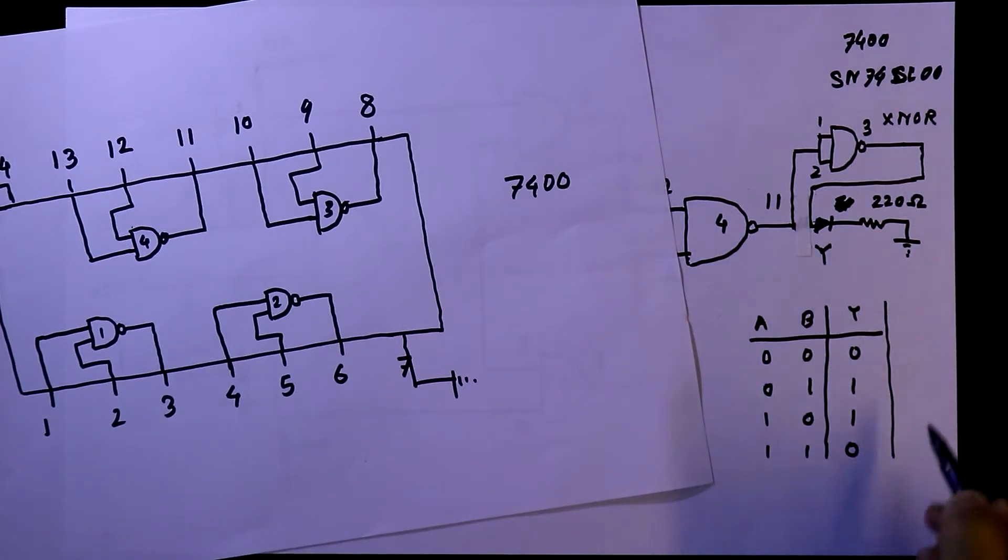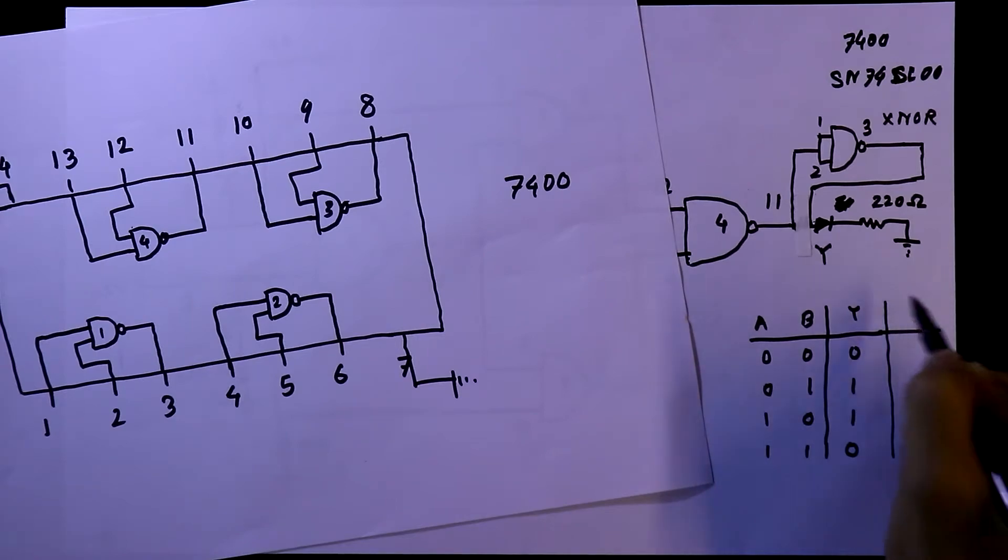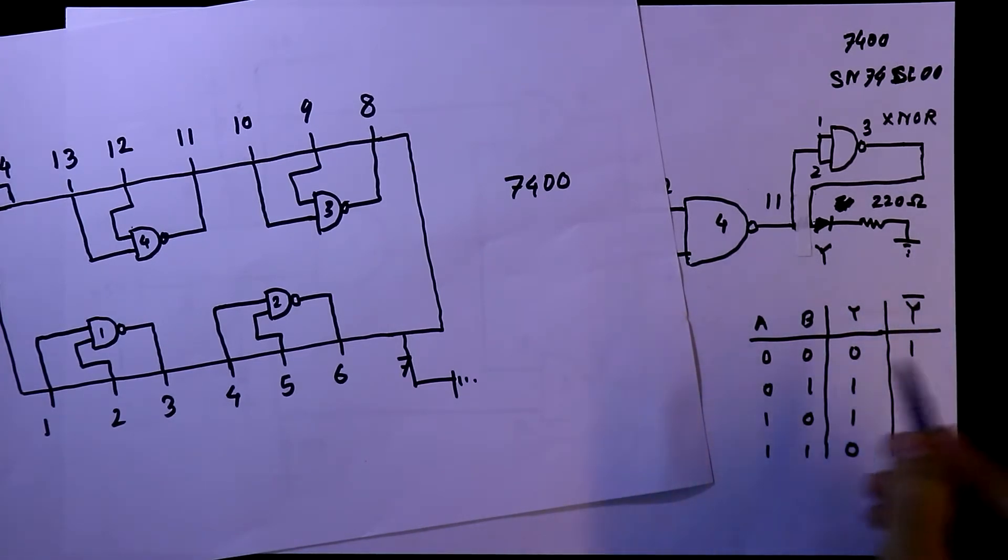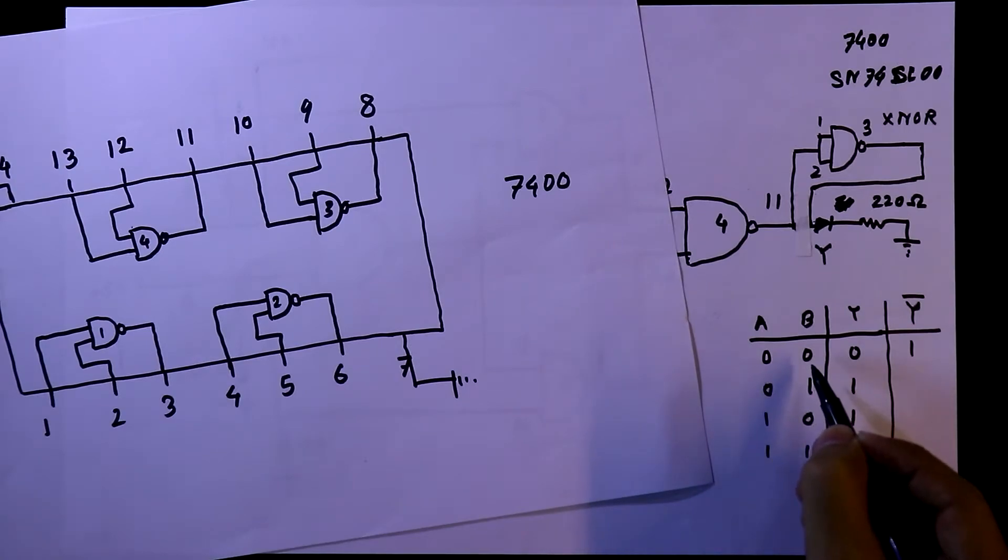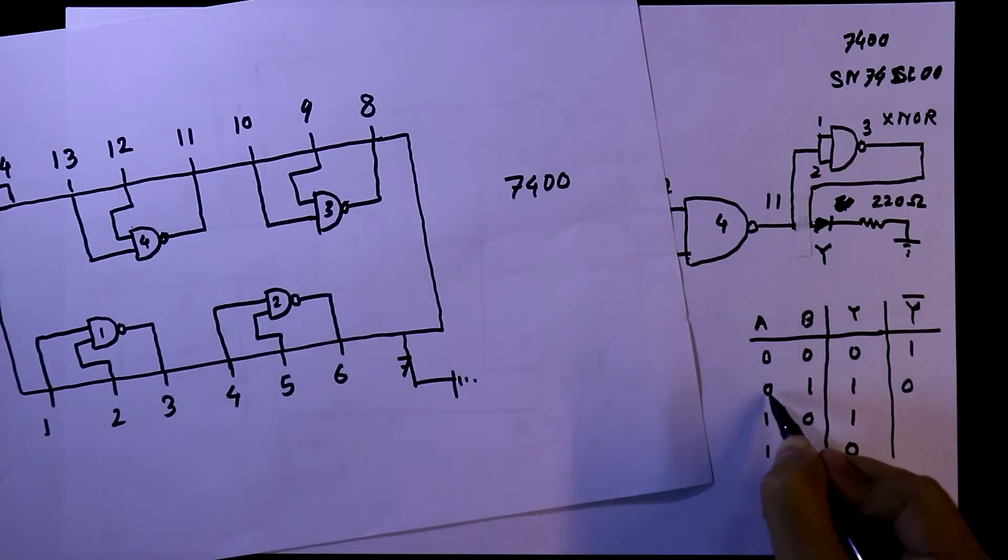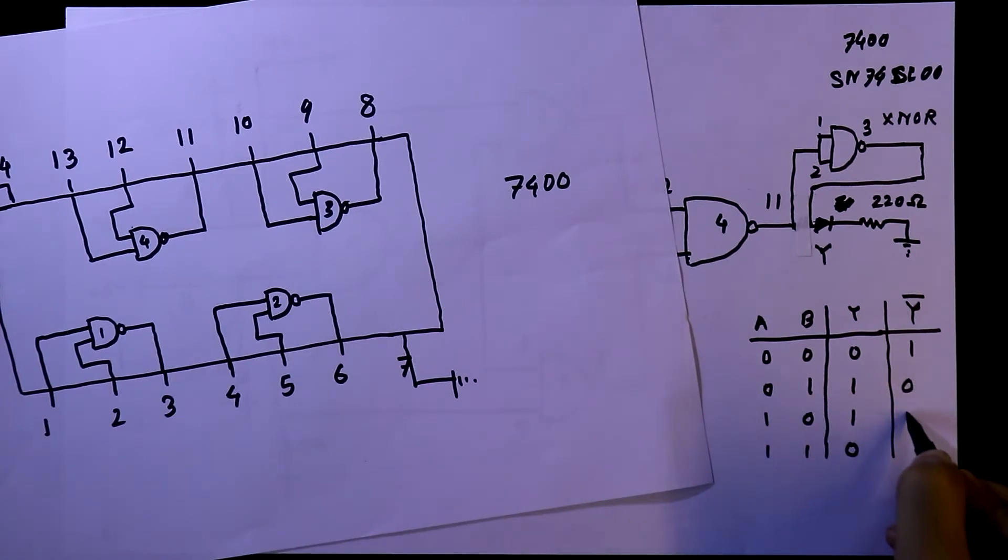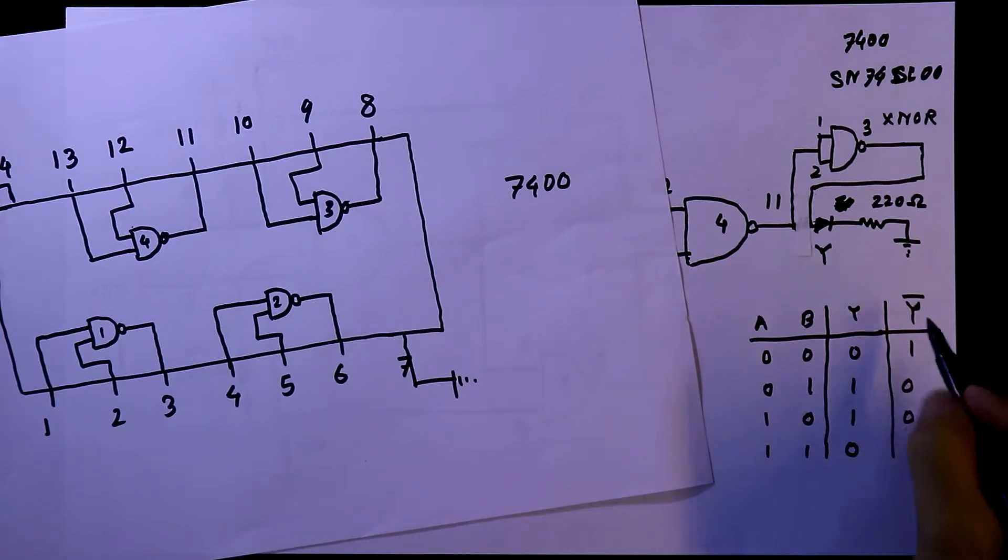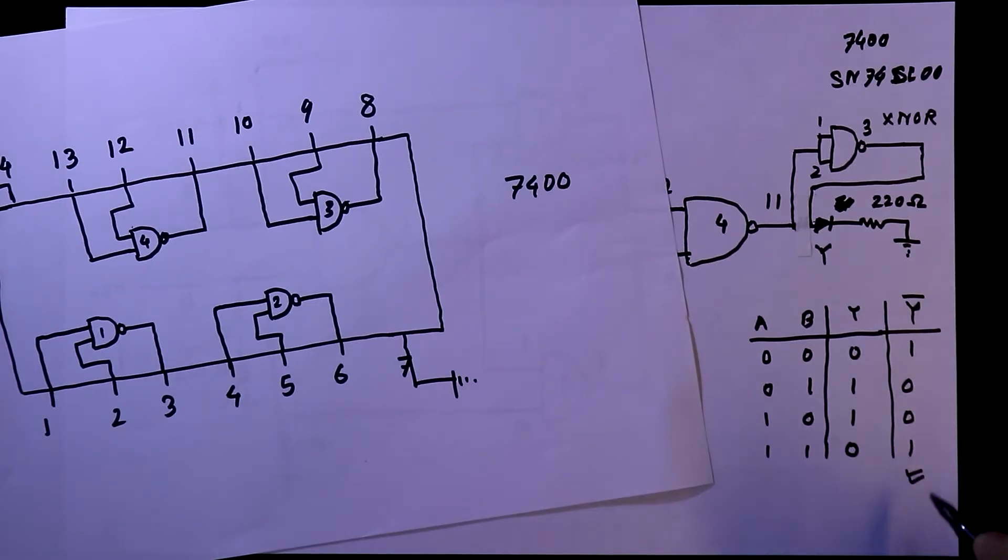The XNOR truth table is: when both inputs are equal or same, the output is 1. If not same then the output is 0. And if again the inputs are same we'll get 1 in the output. We'll verify this in the practical.